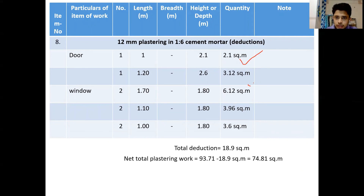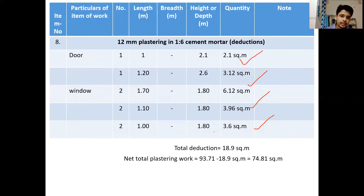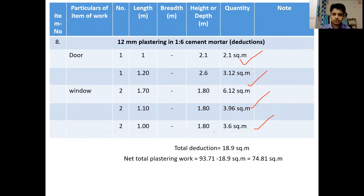Deductions for door and window opening areas are multiplied and subtracted from the total plastering calculation. Finally, calculations are also needed for painting, holdfasts, nuts, bolts, window frames, and door frames, but those are skipped here to keep it brief. The painting calculation will be exactly similar to plastering. Door frames are measured in cubic meters, door shutters in square meters, and holdfasts in numbers and weights. This completes the numerical.